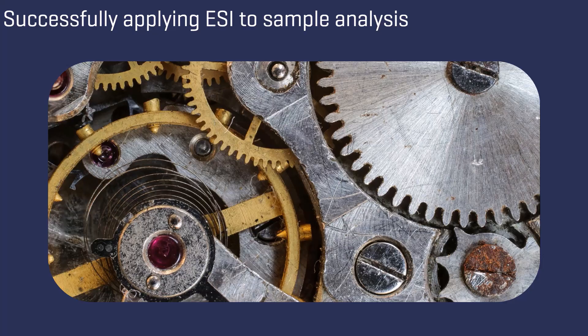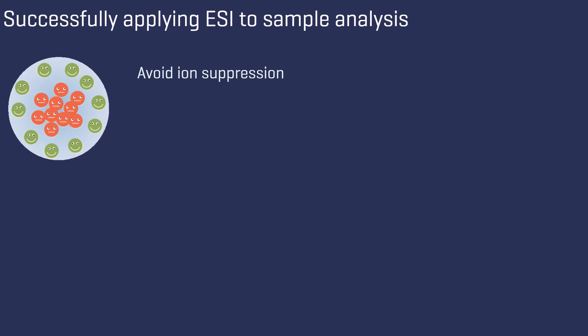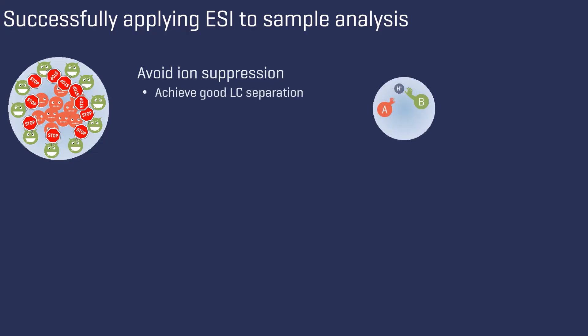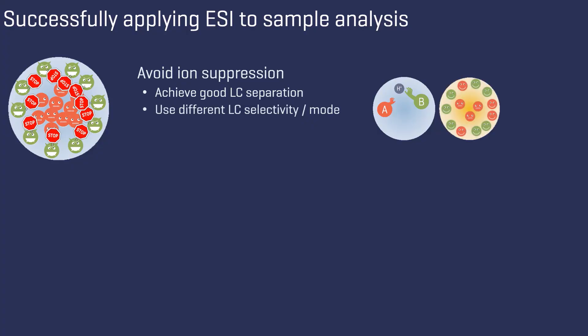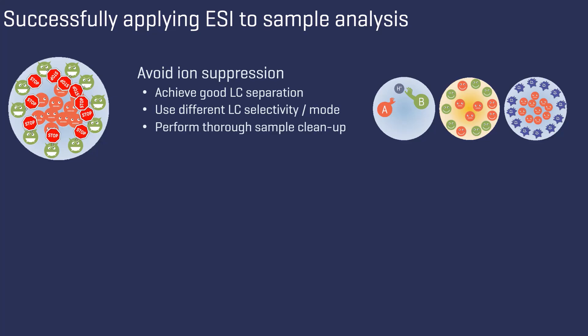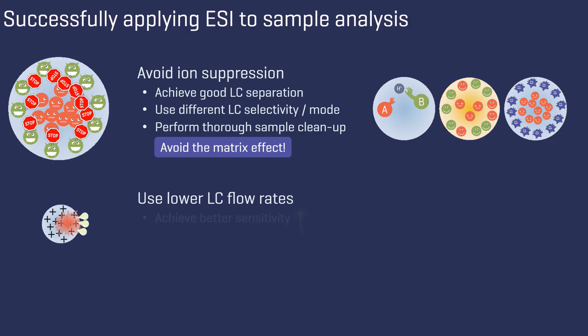How can we apply the knowledge we have acquired to effectively perform sample analysis in practice? First of all, it is important to prevent ion suppression. This term refers to the case where our target ions cannot effectively compete for positioning at the droplet's surface during the electrospray process. To address this, it is beneficial to achieve good LC separation of the analytes. You can also try using another LC selectivity or separation mode to increase the content of organic solvent at the time when your target analyte is eluted. In addition, it is advisable to put effort into the sample preparation. The less matrix in your sample, the fewer molecules compete for the place at the surface, also referred to as matrix effect. You can try lower flow rates to achieve better sensitivity.